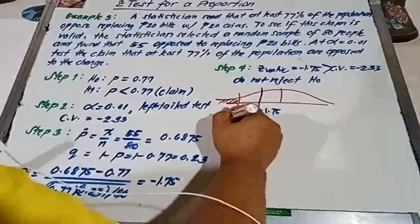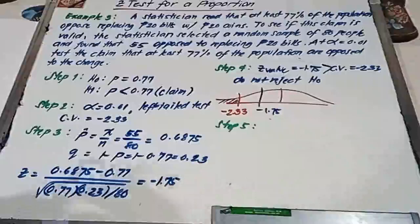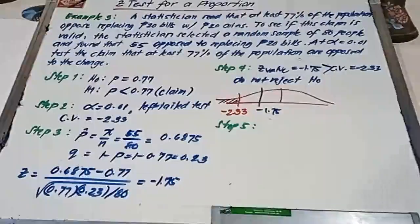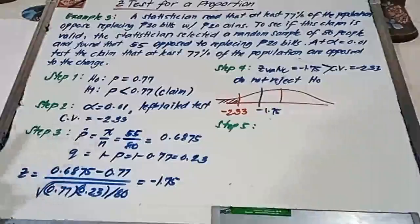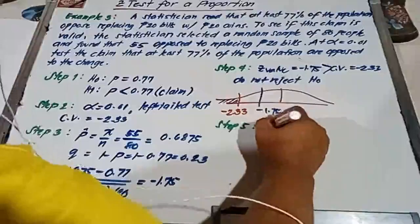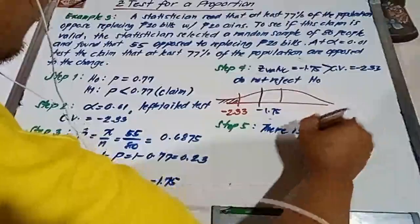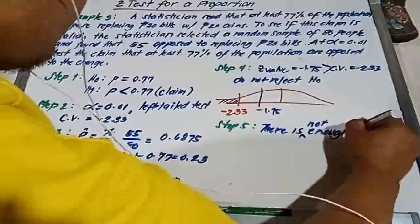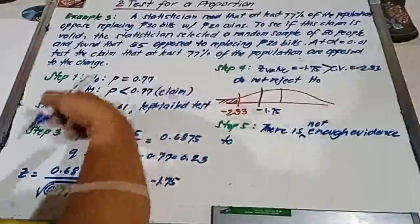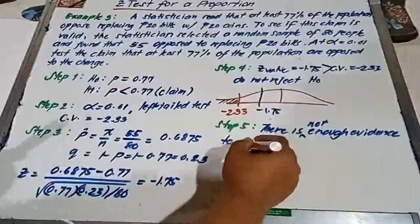And for our last step is our summary. There is not enough evidence to support the claim. This is the claim. So we reject the alternative hypothesis. There is not enough evidence to support the claim.